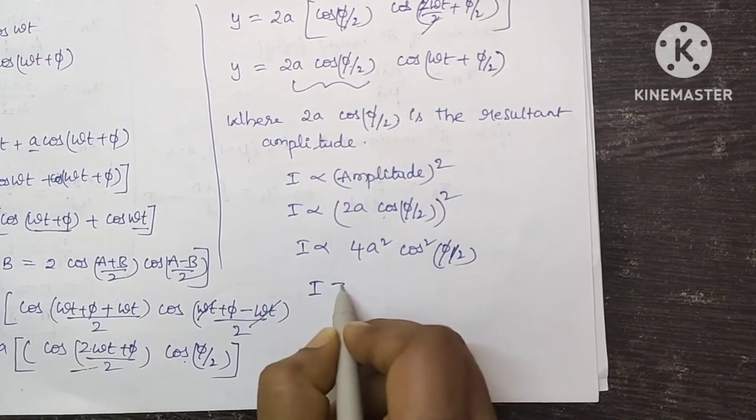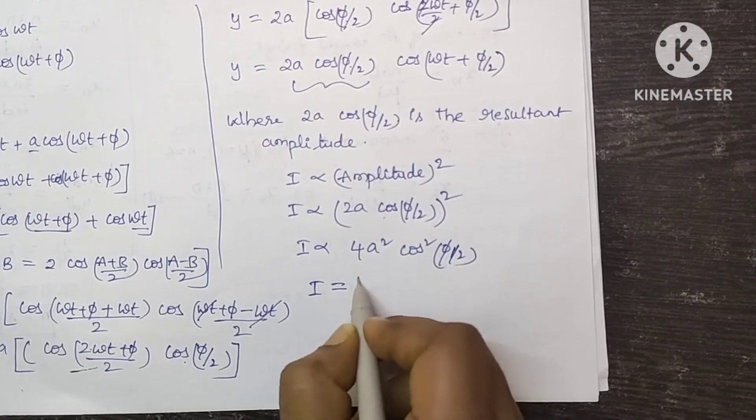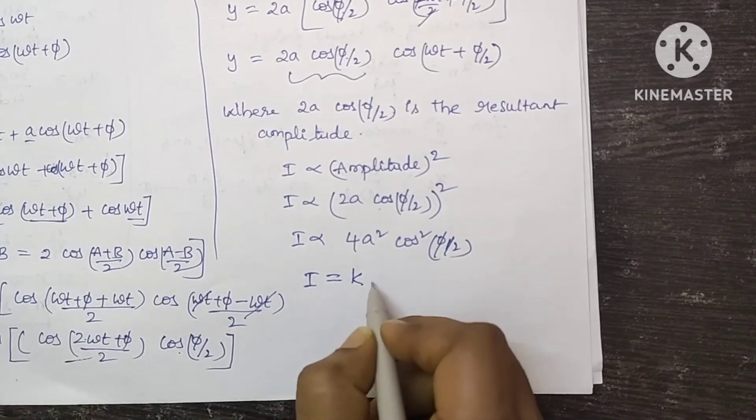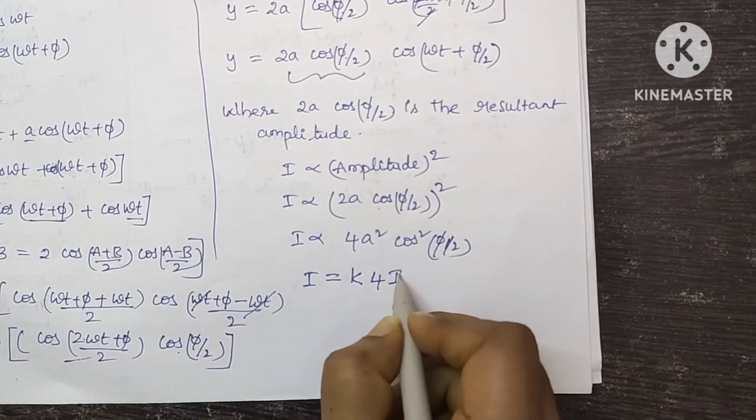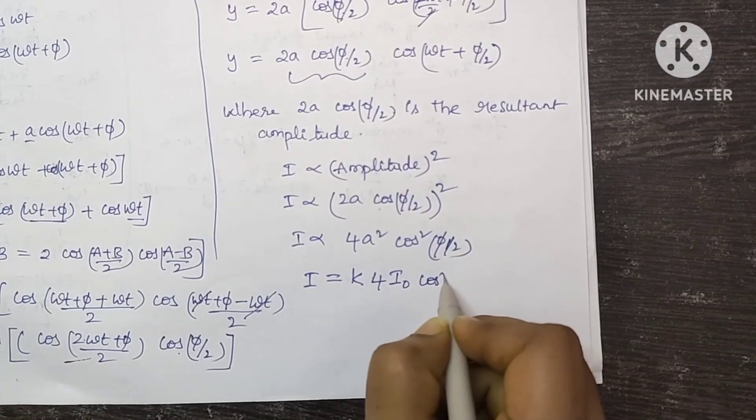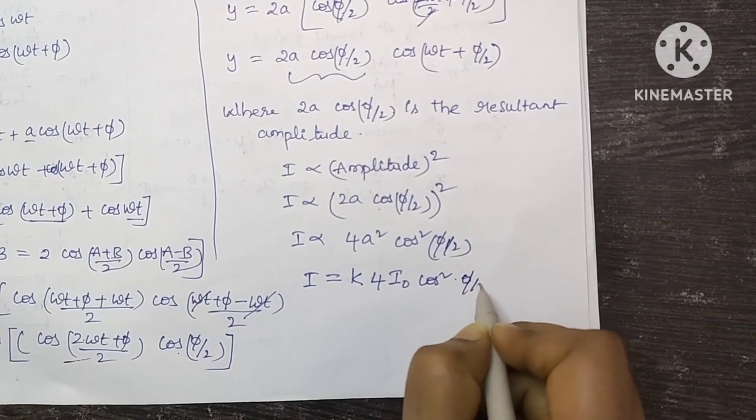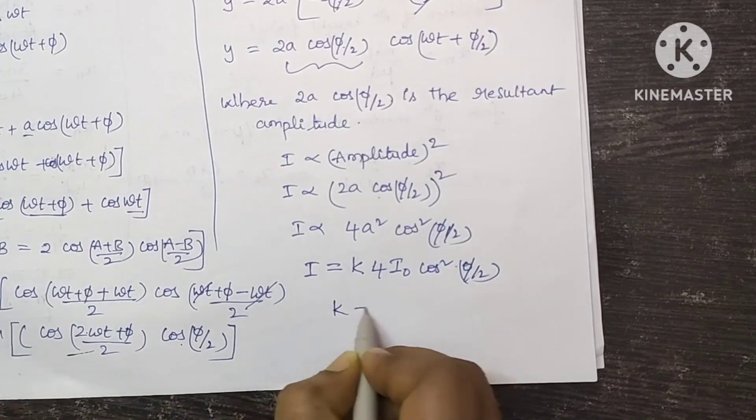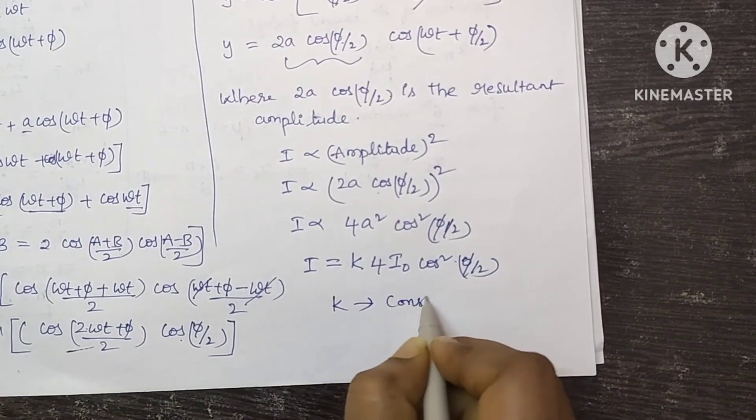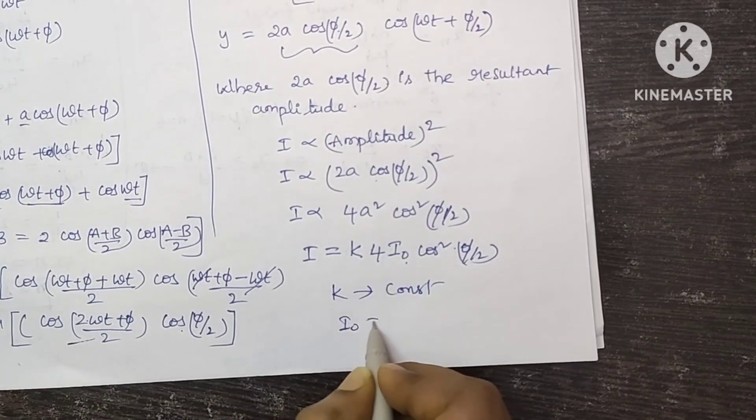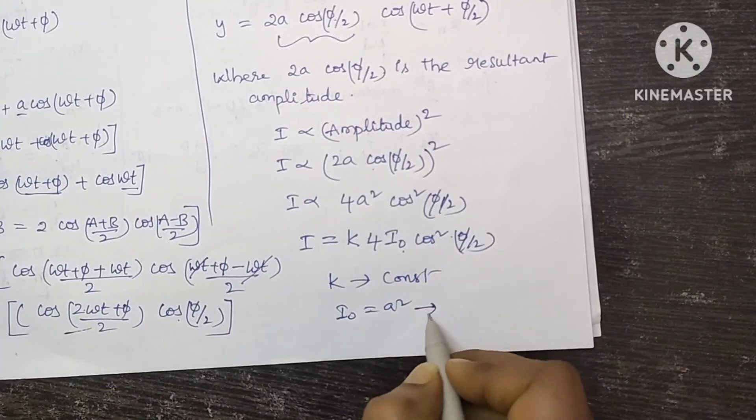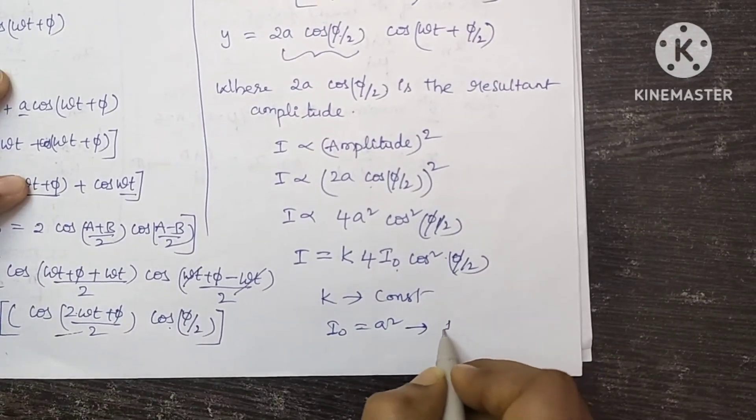So now I am replacing this proportionality with a proportional constant K for I0 cos square phi by 2, where K is the proportionality constant and I0 equals A square. This is the intensity of individual wave.